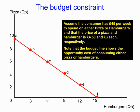At point A, this individual with income of forty-five pounds a week could spend all their money on pizzas — they could buy ten pizzas at four pound fifty each, that's forty-five pounds. They wouldn't have any money left over to buy hamburgers, so they'd buy zero hamburgers. Alternatively, at point F the consumer could spend all forty-five pounds on hamburgers — fifteen hamburgers at three pounds each — and buy zero pizzas.